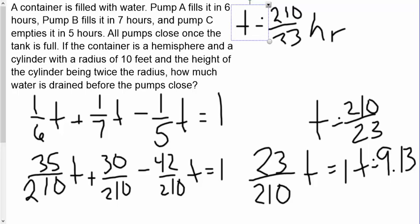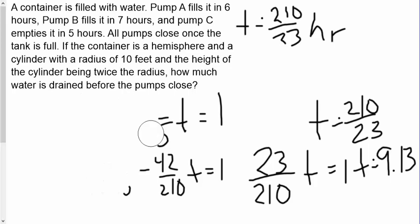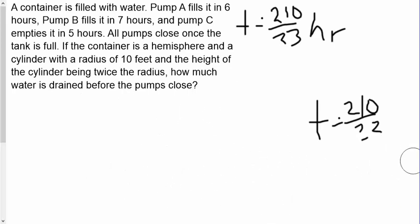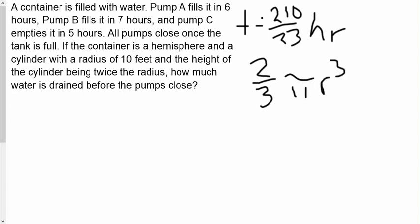Now the next thing that we need to do is we need to figure out what is the volume of our shape. Right? Because without that we don't know really what we're doing. So we have a cylinder with a hemisphere on top, hemisphere being half a sphere. So the hemisphere volume is two-thirds pi r cubed. Remember two-thirds because it's half a sphere and a sphere is four-thirds pi r cubed. And then we have a cylinder.